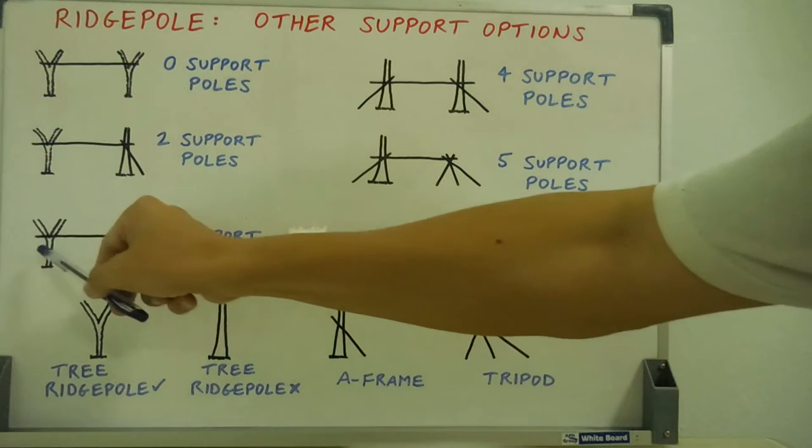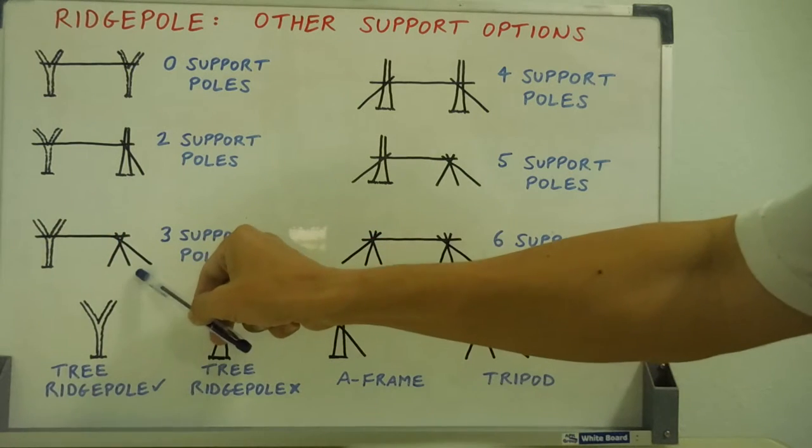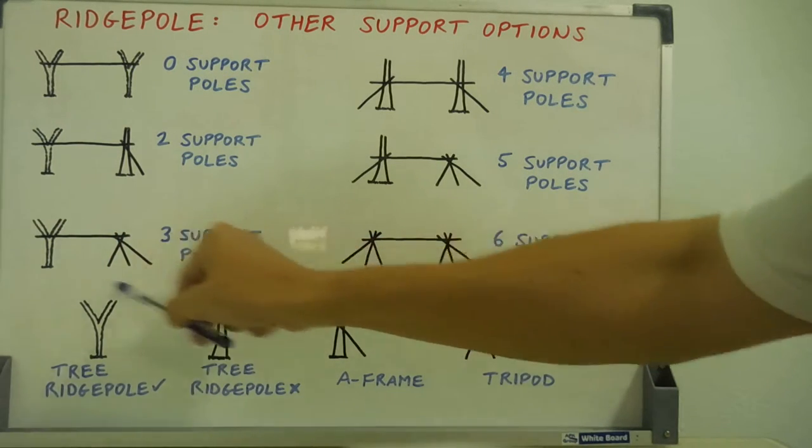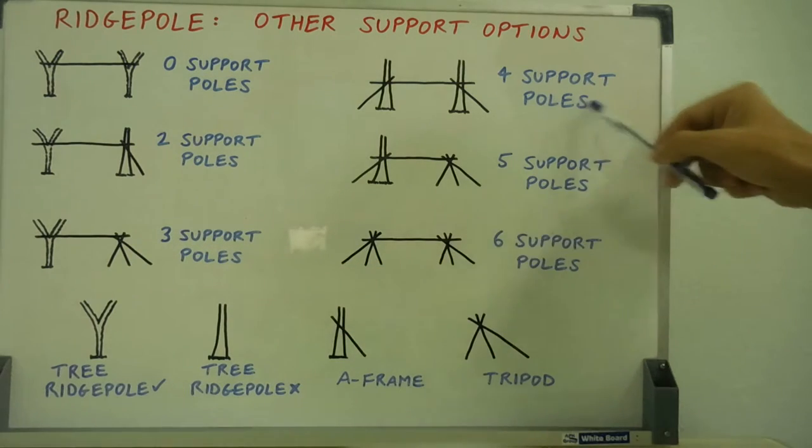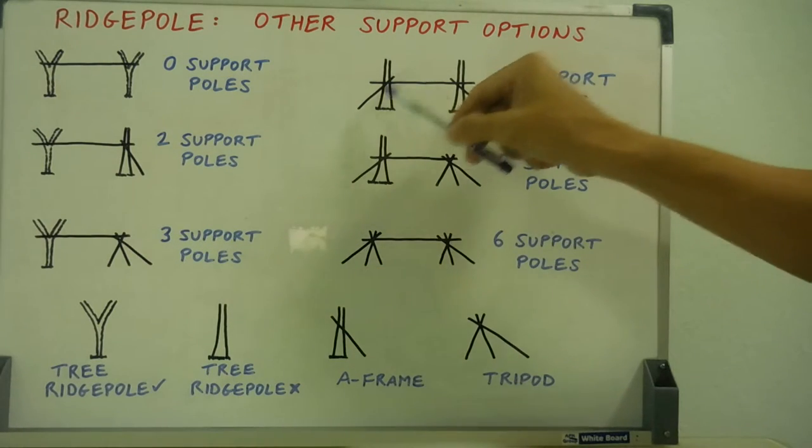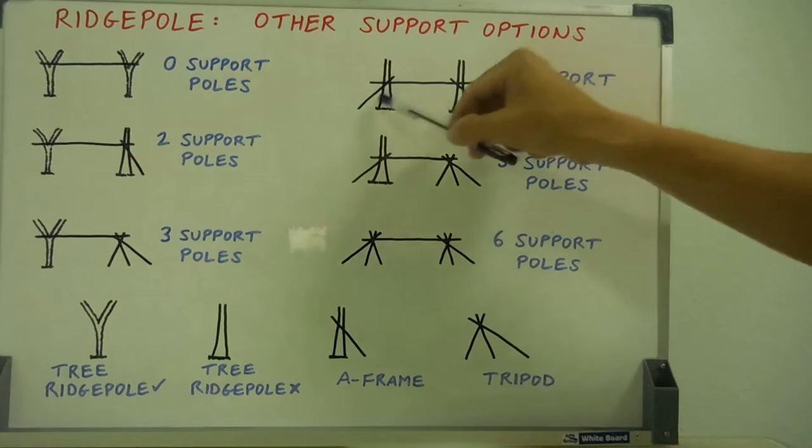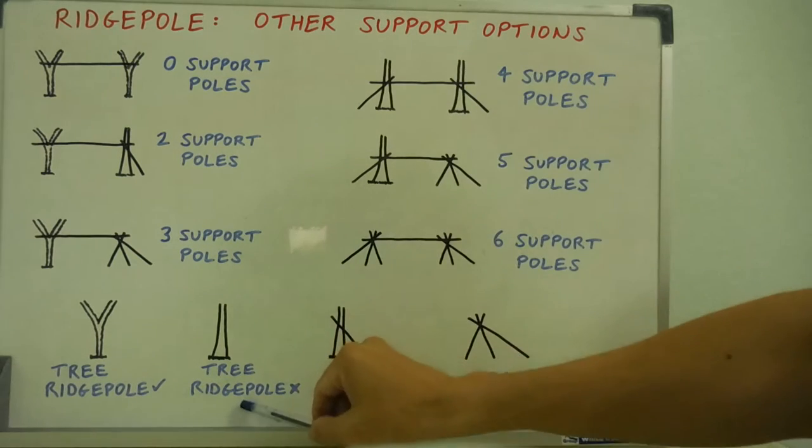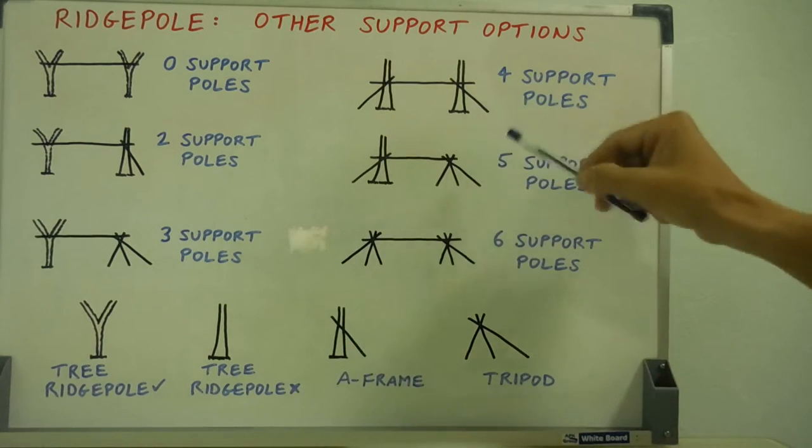Then we can have our handy tree again and a tripod, there's three support poles. Then up here, four support poles. We've got two A-frames jammed against two trees that cannot support ridge poles, just like that, there's four support poles.